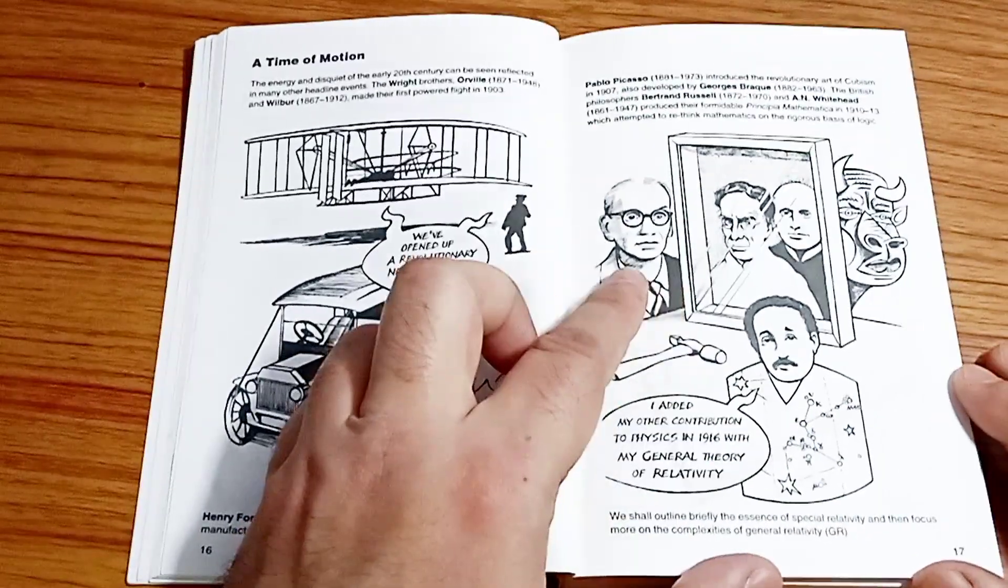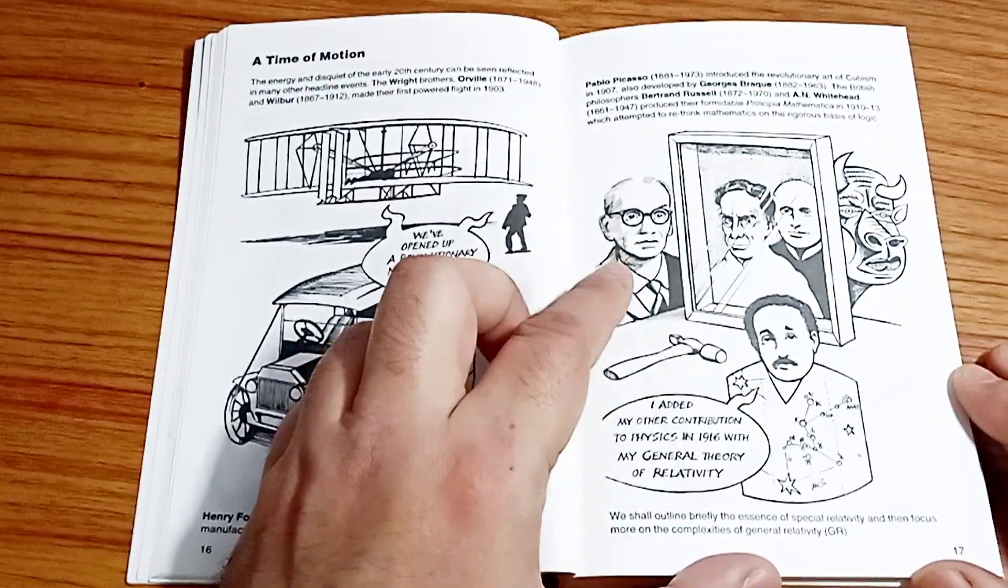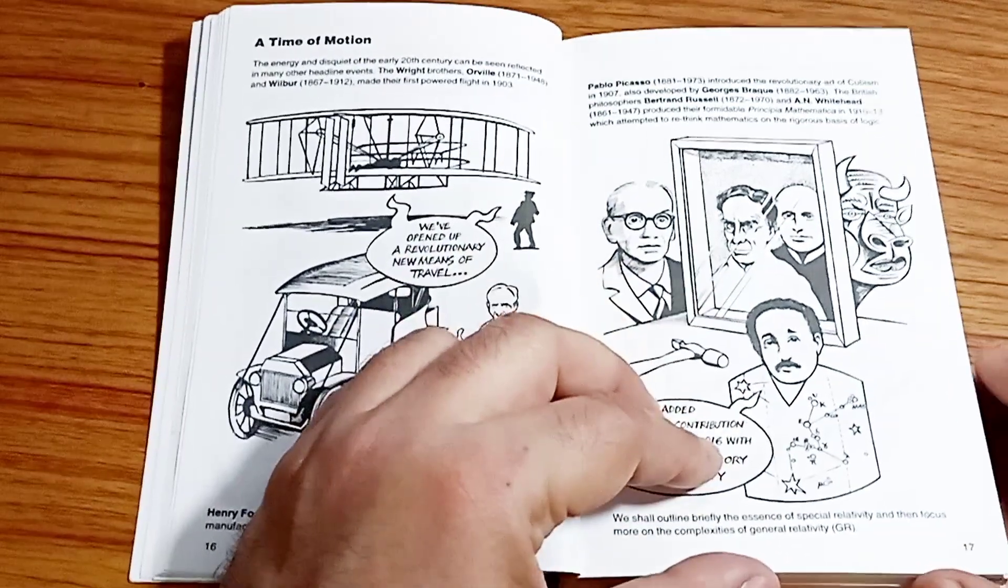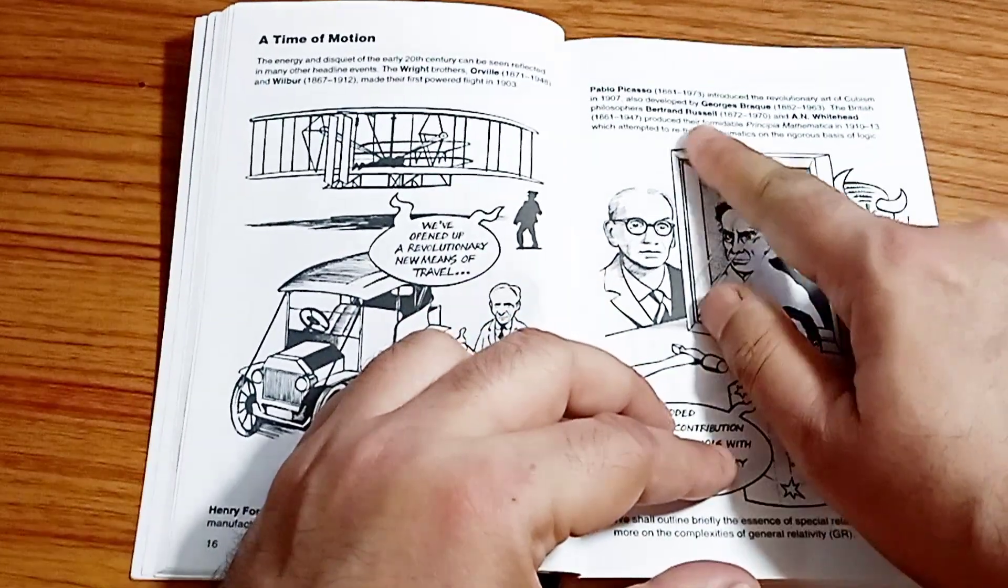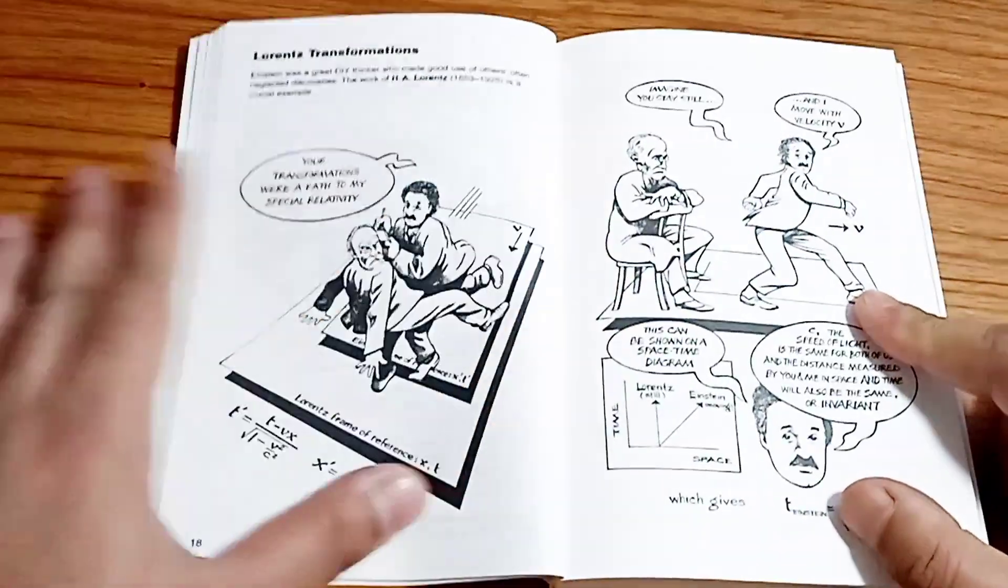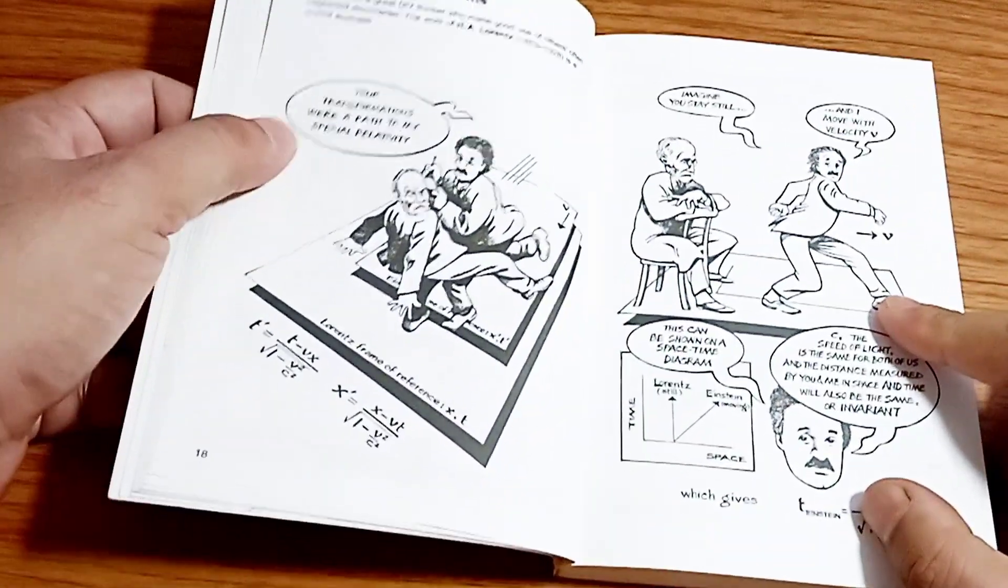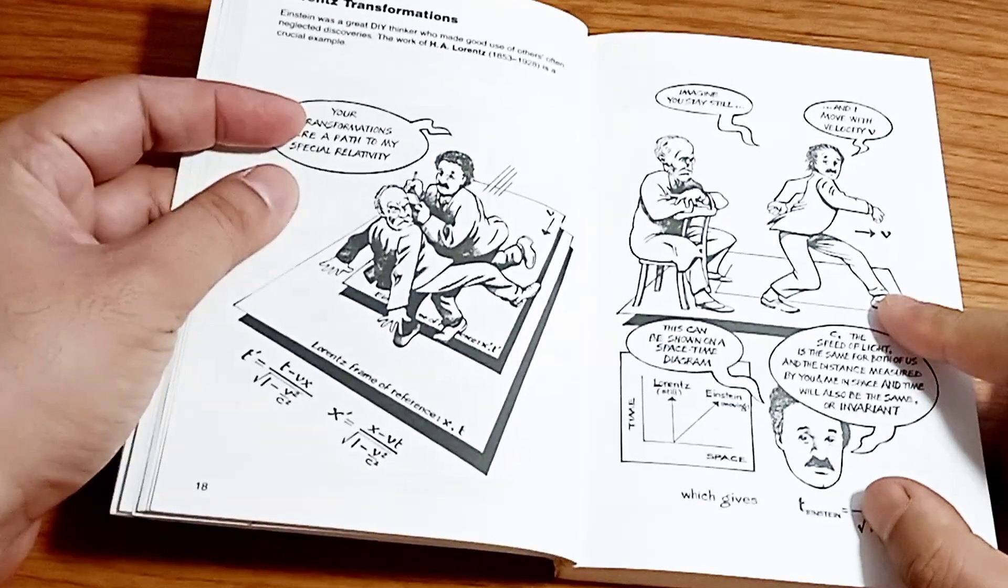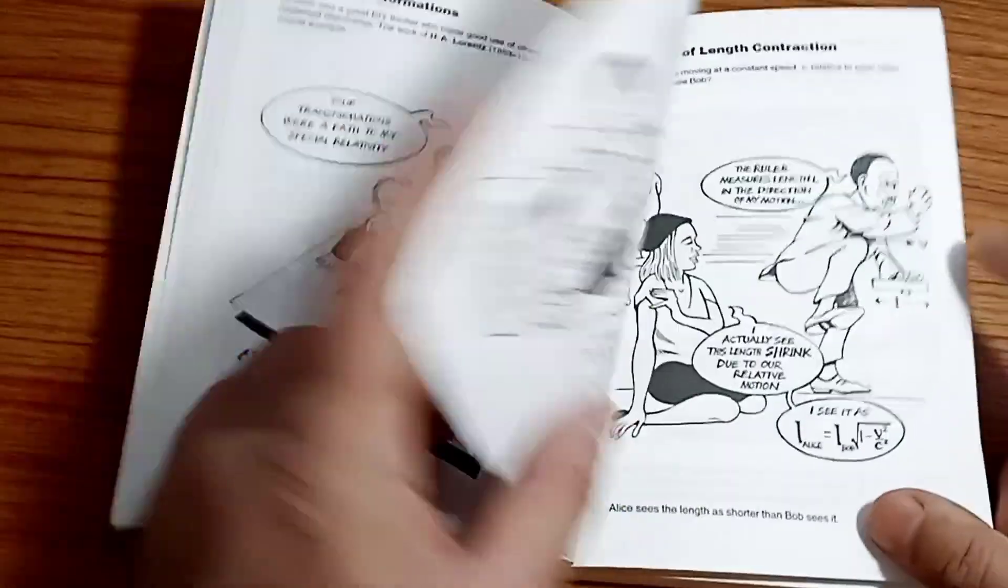Then the time of motion followed by Kurt Gödel. So he is also here and there's a contradiction in terms of relativity. So you can see here Bertrand Russell and A invited. Then comes the Lorentz transformation. This is your transformation where a path to special relativity. The transformation happens, the effect of length contraction.